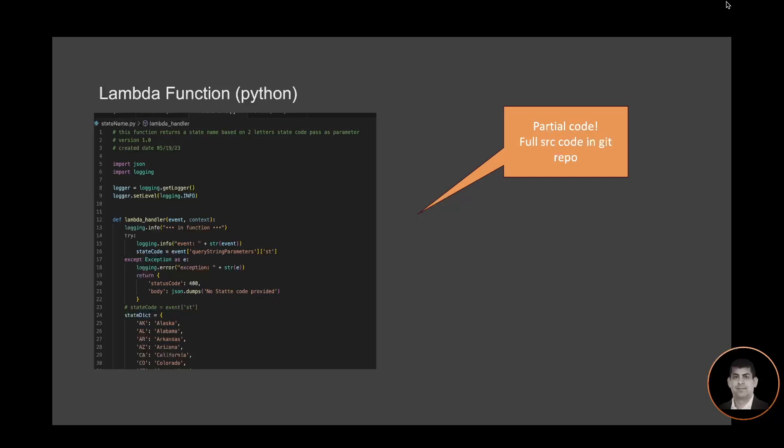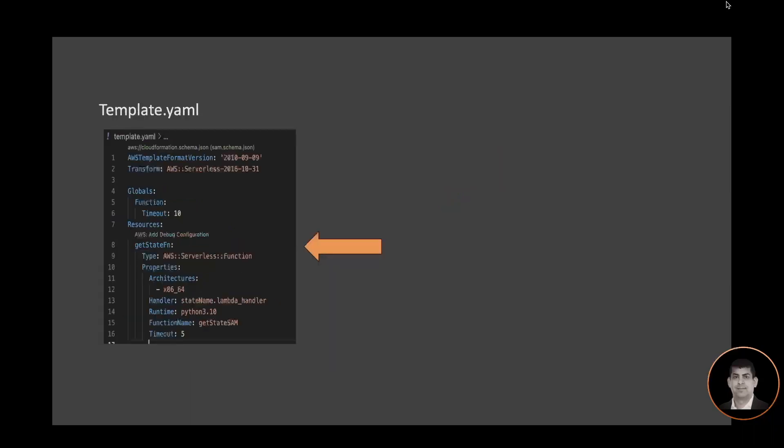This function is straightforward. I'm importing the JSON library and logging, creating a logger instance. I have a standard Lambda handler function that takes event and context as parameters. I'm getting a state code from the query string parameters and then using that state code in a state dictionary to retrieve the state name. It's partial code — I will post the full source code in the Git repo.